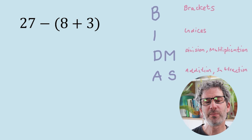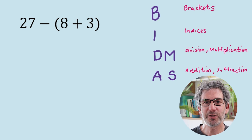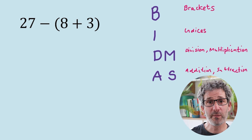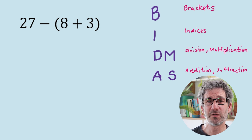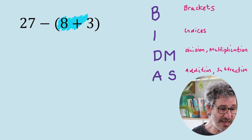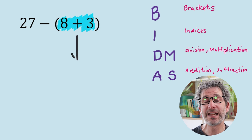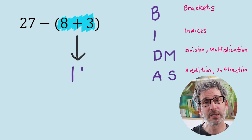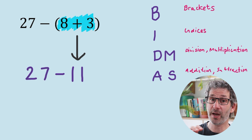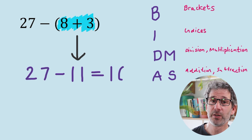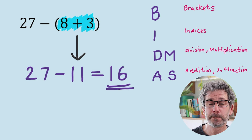Next: 27 minus, in brackets, 8 add 3. We've got brackets, so we work out the stuff inside first. 8 add 3 is 11, and then we do 27 minus 11, which is 16.